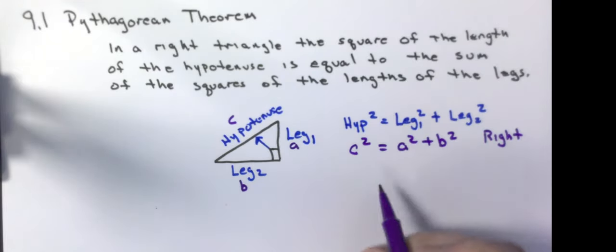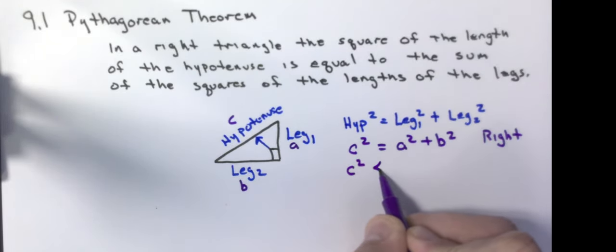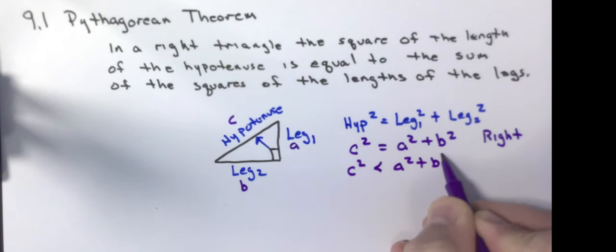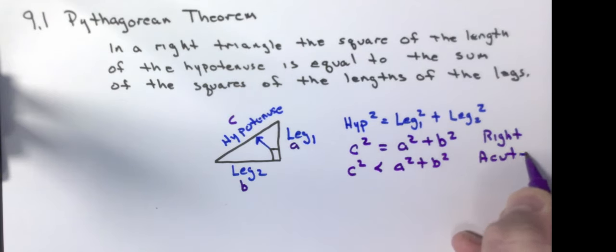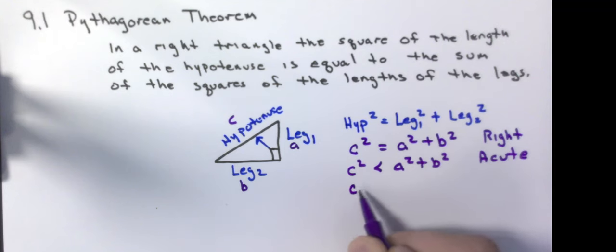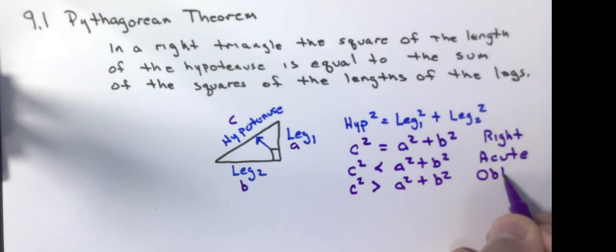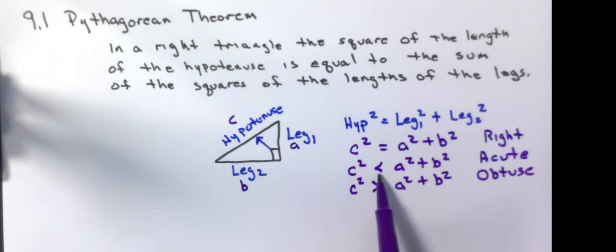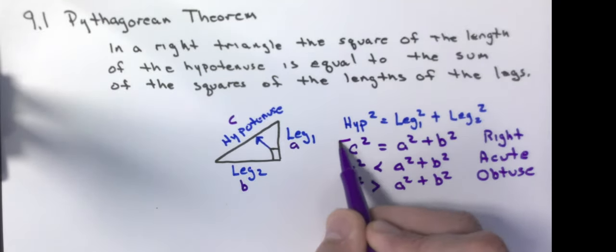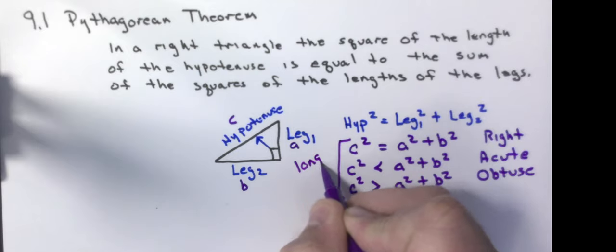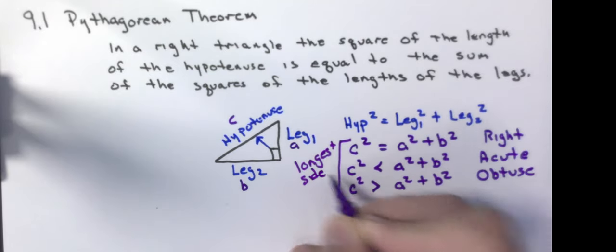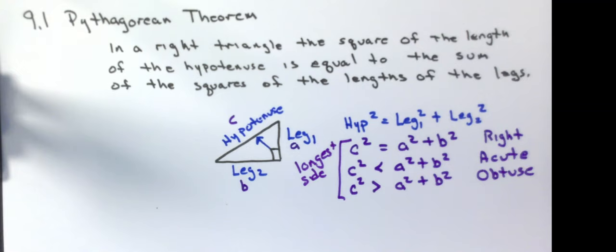If the longest side squared is smaller than the sum of the other two sides, then you have an acute triangle. And if the largest side squared is bigger than the sum of the squares of the other two sides, you have an obtuse triangle. The less than sign means I got a small triangle. The greater than sign means I have a big triangle. And it's very important that this biggest side, so this is the longest side, goes on the left-hand side if you're going to do any of those relationships.